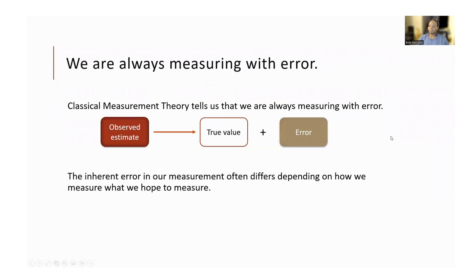In thinking about the model you use, remember that our estimate is always a sum of the true value and an error term. There are potential sources of error in the primary studies that we need to think about when making a decision on the model. Sometimes when you're reading a peer-reviewed article, everything looks so well done that there cannot be error sources, and it's already peer-reviewed and published. But we have to think carefully about the fact that every estimate that is reported has an error around it.